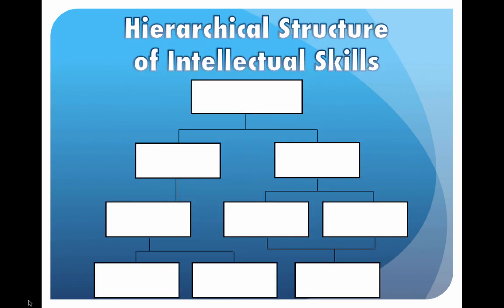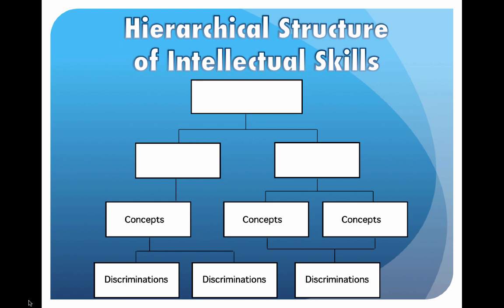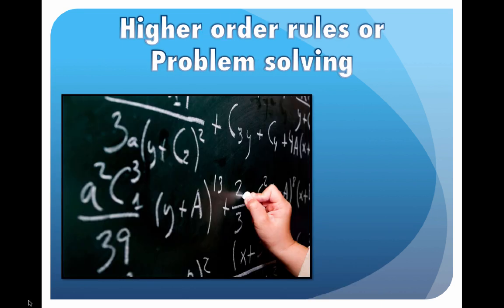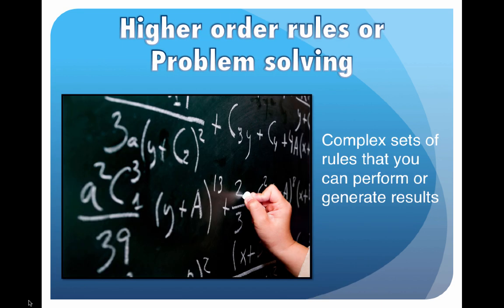Intellectual skills are those complex rule-governed mental processes, and cognitive strategies are specialized intellectual skills for managing our own learning. There is a hierarchical structure of intellectual skills, starting at the bottom with discriminations. Moving up, we have concepts. Those concepts, when put together, become rules. And those rules, when put together, become problem-solving. At the top are the higher-order rules — a complex set of rules that you can perform or generate results.